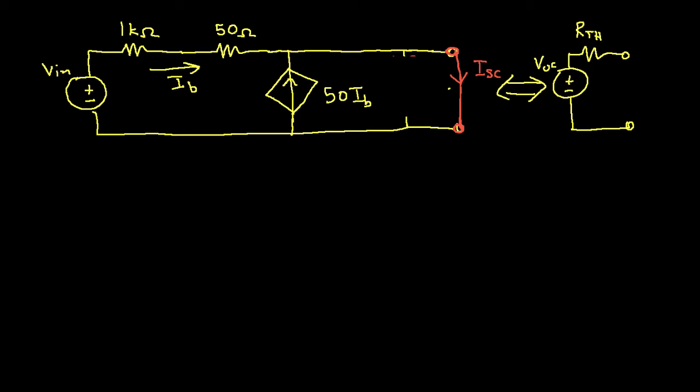So now at this point, we can apply Kirchhoff's current law to this point in the circuit. And when we do this, we get that ISC is equal to I sub B plus 50 I sub B. And I guess we can write that as 51 I sub B.